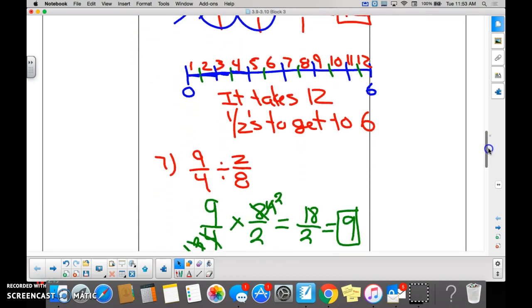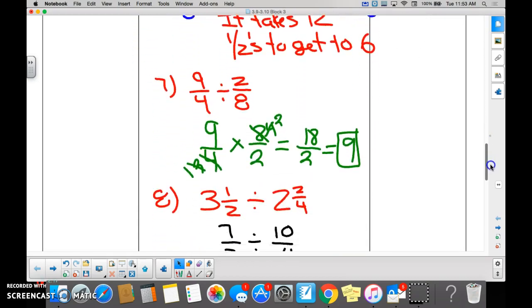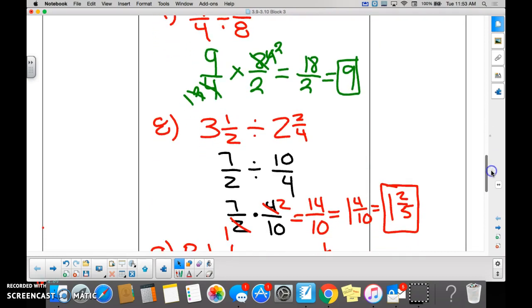Sliding on down, number seven is just another example. Sliding on down, number eight. Now, on number eight, it's a mixed number.